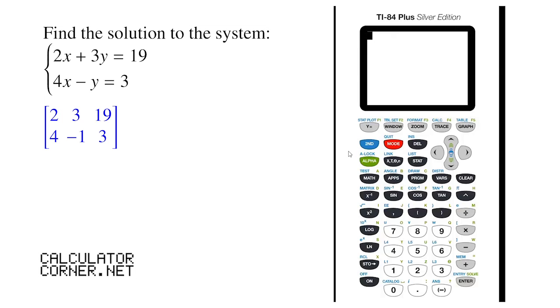Now the process that we're going to use to find the solution to the system is called the reduced row echelon form. The abbreviation for that is RREF. Let's go into the matrix menu, second matrix, tab once over to math.